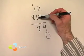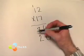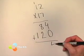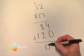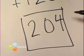Bring the 0 down because we're doing the 10s now. 1 times 2 is 2. 1 times 1 is 1. Add them together. 4 plus 0 is 4. 8 plus 2 is 10. Carry the 1. And 1 plus 1 is 2. 204.